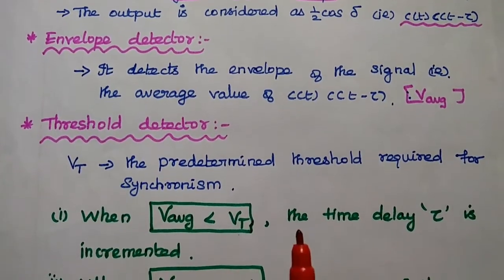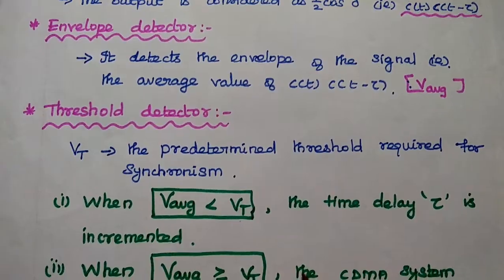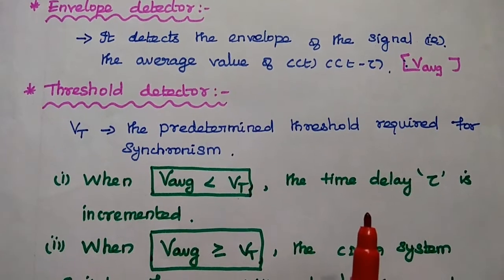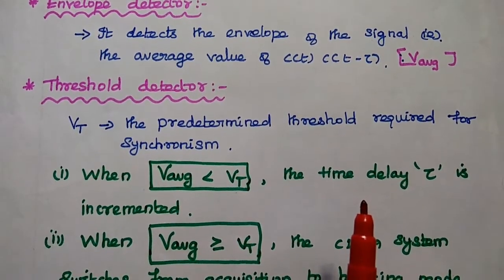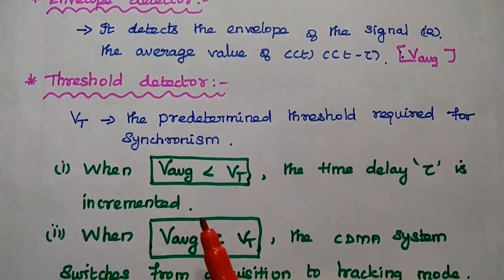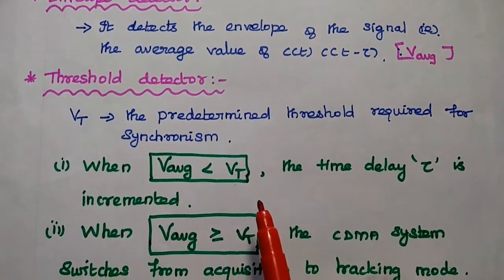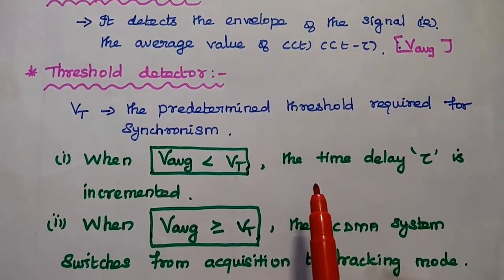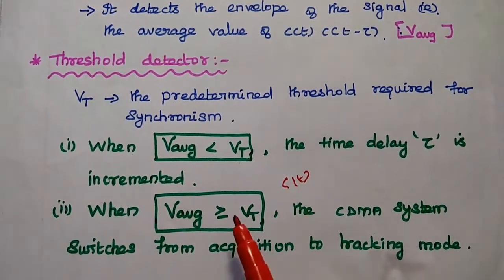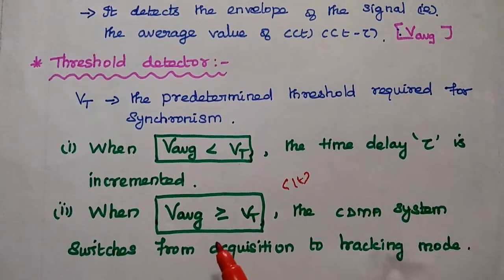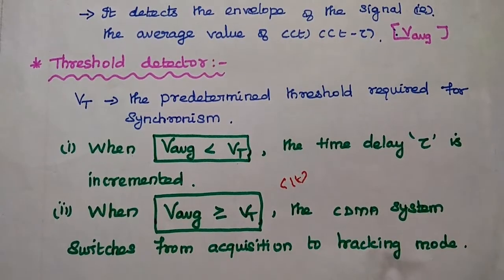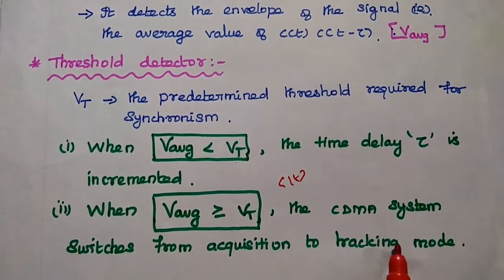In the threshold detector, we compare the average voltage with the threshold voltage VT. VT is the predetermined threshold required for synchronization. When the average voltage from the envelope detector is less than VT, the time delay value is incremented to get the proper carrier frequency. When the average voltage is greater than or equal to VT, the CDMA system switches from acquisition to tracking mode.